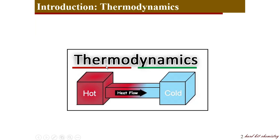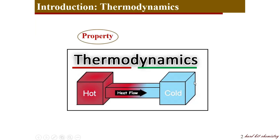Coming to the word thermodynamics, it has two parts: thermo and dynamics. The first part, thermo, reflects heat, and dynamics indicates a process or something going on inside your system. It is not simply just heat flow — thermodynamics indicates processes which involve any kind of energy or any form of energy. Heat is a property and dynamics is a process, and this process-property relation is what thermodynamics covers.